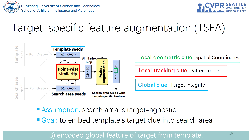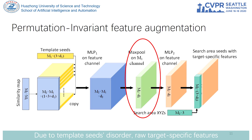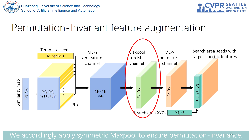Third, the encoded global feature of the target from the template. Due to the template's disorder, raw target-specific features can be inconsistent during point-wise similarity calculation. We accordingly apply symmetric max-pooling to ensure permutation invariance.